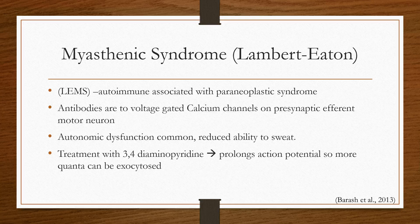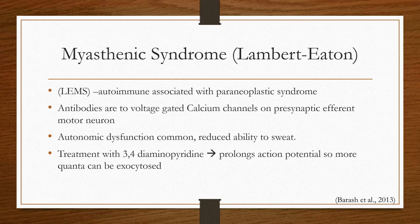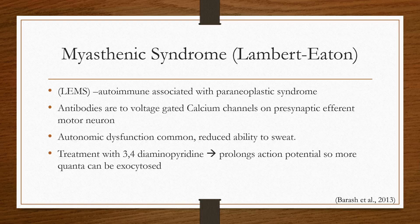Lambert-Eaton myasthenic syndrome is an autoimmune disease associated with a paraneoplastic syndrome, meaning it is associated with some kind of malignancy in the body. It typically presents with small cell lung carcinoma but can be any neoplasm. Antibodies are created against presynaptic calcium channels that allow calcium influx for neurotransmitter release, so the efferent motor neurons have a decreased ability to release acetylcholine — it's not so much the muscle itself but the nerves innervating it.